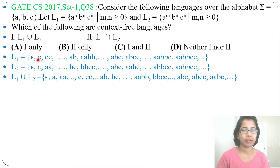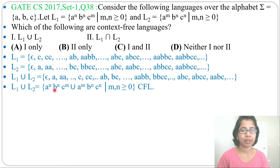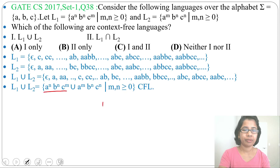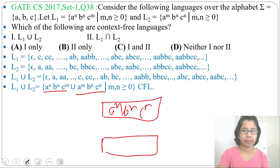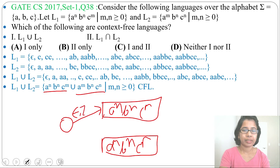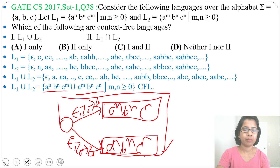Now what will be the union of both? The union will contain all strings in L1 plus all strings in L2, giving us AⁿBⁿCᴹ ∪ AᴹBⁿCⁿ where M, N ≥ 0. This is a context-free language because you can design a PDA for the union. You design one PDA for AⁿBⁿCᴹ and another for AᴹBⁿCⁿ, create a new start state, and from that initial state use epsilon transitions to reach the initial state of both PDAs. So the union of two CFLs is a CFL.